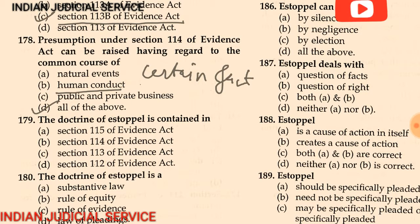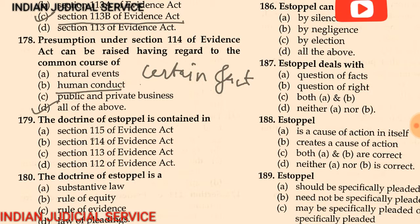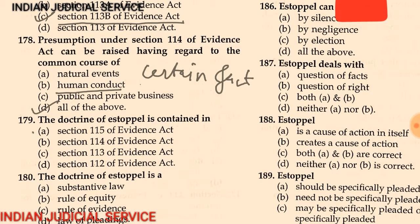Question 179: The doctrine of estoppel is contained in — (A) section 115 of Evidence Act, (B) section 114 of Evidence Act, (C) section 113 of Evidence Act, (D) section 112 of Evidence Act. It is clear that the doctrine of estoppel is found in section 115 of the Evidence Act. Option A is correct.